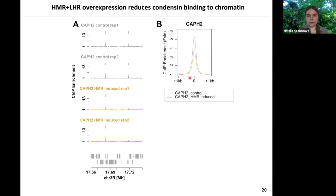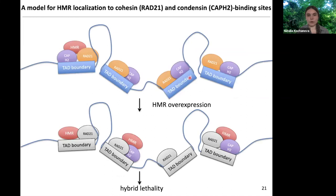This brings us to the following model: there are many TAD boundaries all over the genome, occupied by cohesin and condensin. Sometimes HMR pops up. When we overexpress HMR, it occupies additional TAD boundaries and condensin binding to chromatin is reduced. We would very much like to speculate that this reduction of condensin binding to chromatin leads to problems with chromosomal condensation in hybrids, and eventually to hybrid lethality. And with this I would like to finish.